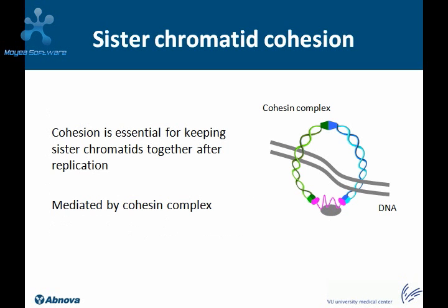As mentioned, cohesionopathies are caused by defects in proteins involved in sister chromatid cohesion. In S phase, DNA is duplicated and sister chromatids are synthesized. These sister chromatids are kept together from replication until cell division by sister chromatid cohesion. This process is carried out by the cohesin complex, which is believed to form a ring around the two sisters to keep them together. Multiple other associated and regulatory proteins are also involved in guiding sister chromatid cohesion.